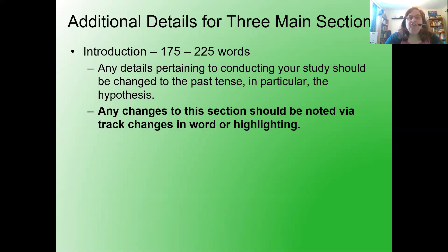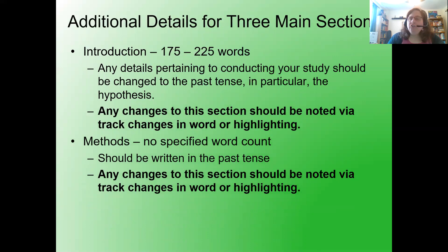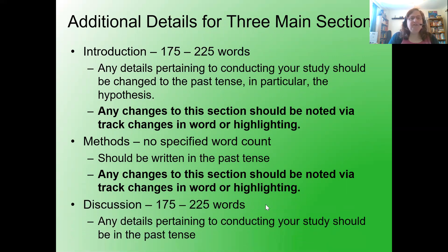Any changes to the section should be noted via track changes in Word or highlighting. Methods: no specified word count — that stays the same, and this should also be written in the past tense. Any changes to this section should also be noted via track changes in Word or highlighting. Discussion: 175 to 225 words. Any details pertaining to conducting your study should be in the past tense.